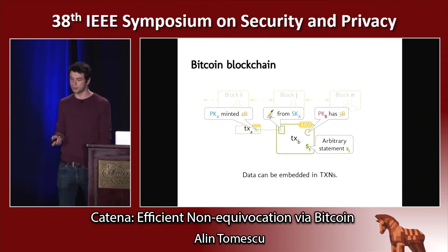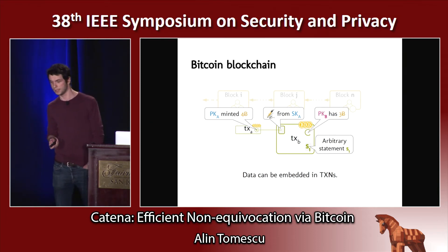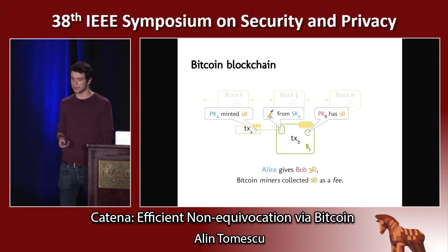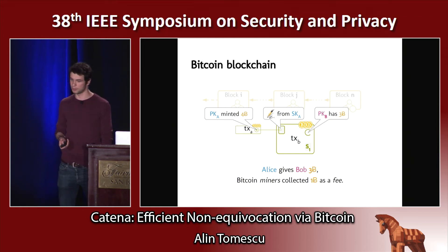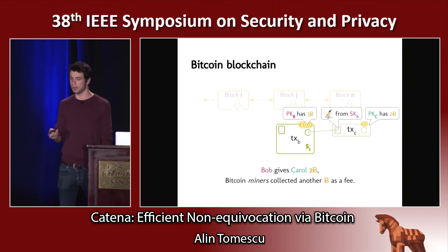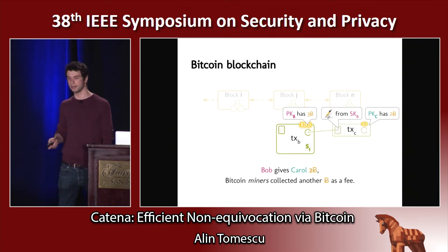Furthermore, what you can do in Bitcoin is embed data in transactions — we leverage this to build a log. Alice can put up to 80 bytes in that transaction TXB. To summarize: Alice gave Bob three Bitcoins, Bitcoin miners collected one Bitcoin as a fee, outputs specify coins and who owns them as a public key, and inputs have hash pointers to outputs being spent plus a signature. This can keep going — Bob can give Carol his Bitcoins, transferring two Bitcoins to Carol and paying one Bitcoin to the miners.